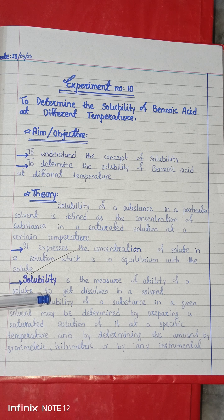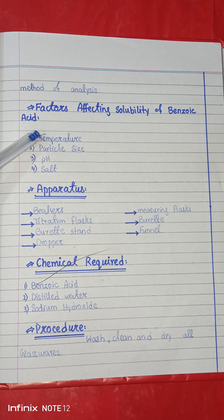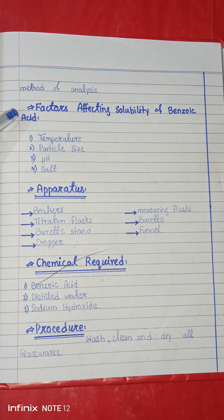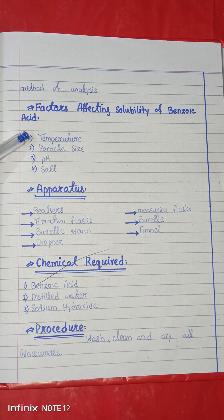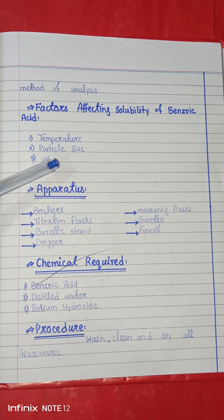Now we move on to discuss the factors affecting the solubility of benzoic acid. Some factors are given below: temperature, particle size, pH, and salts. All of these factors can affect and change the solubility of benzoic acid. For example, when temperature increases, solubility increases; as particle size decreases, solubility increases.